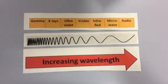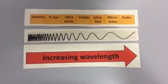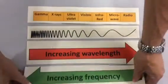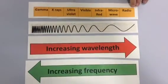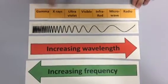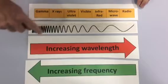However, the frequency, which is the number of waves per second, that increases in the opposite direction. So you can see as you're going from radio waves to gamma rays, the number of waves per second starts to increase.